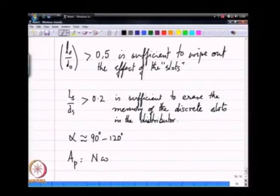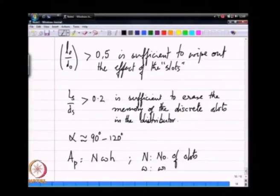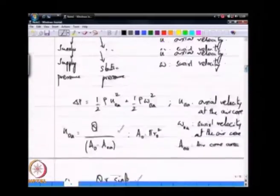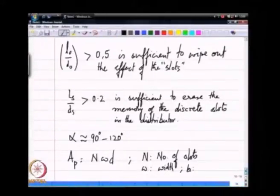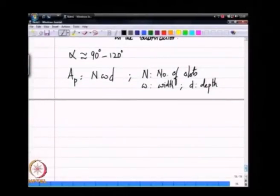Say AP is N times W times H we wrote this down. N is the number of slots, W is the width of the slot and H is the height or depth of the slot. You can again see the only parameter that makes a difference to the flow rate is AP, which is again N times W times D.